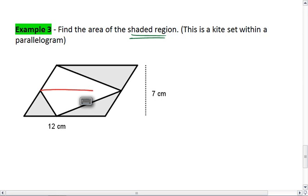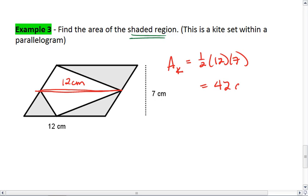Because this is a parallelogram, then the mid-segment of that parallelogram is also 12 centimeters. So, the area of my kite is going to be 1 half, 12 times 7, which gives me 42 centimeters squared. Then, the area of the entire parallelogram is base times height, which is just 12 times 7, and I get 84. Then, the area of the shaded region is the area of the parallelogram minus the area of the kite.